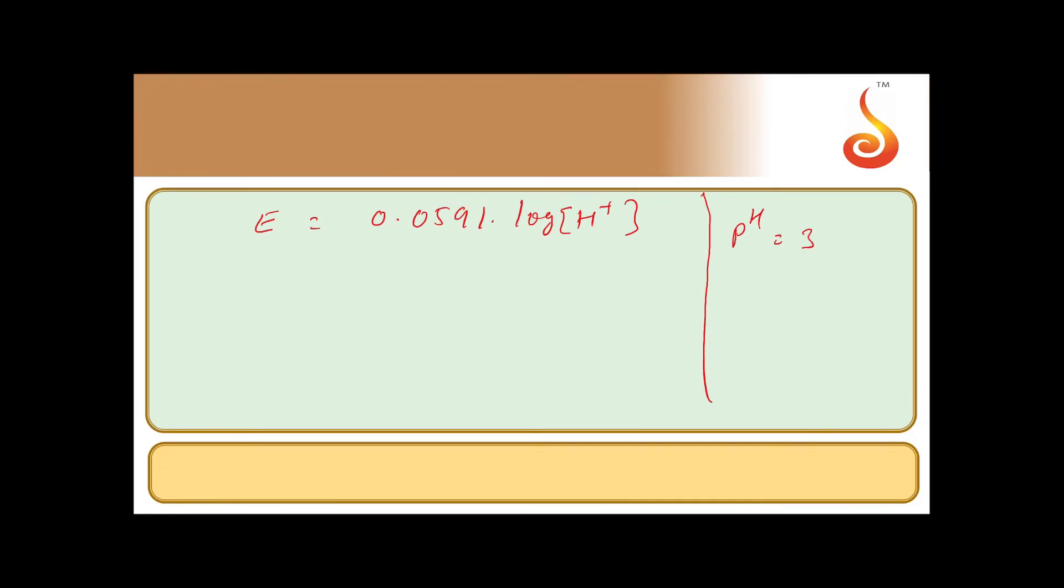Now here they have given us pH value. pH is given as 3. When pH is 3, this implies hydrogen ion concentration is equal to 10 to the power of minus 3.